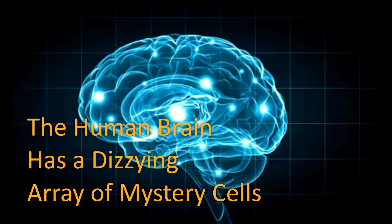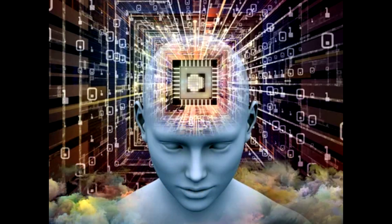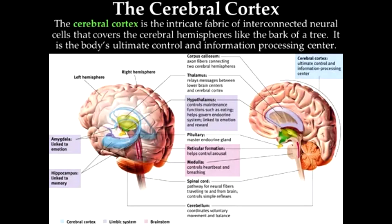The human brain has a dizzying array of mystery cells. Researchers identified some 3,300 types of brain cells, an order of magnitude more than was previously known, and have only a dim notion of what most of them do.